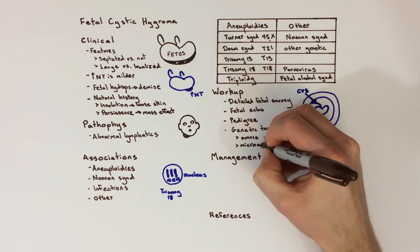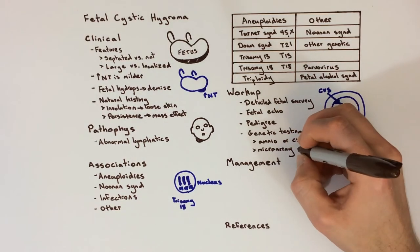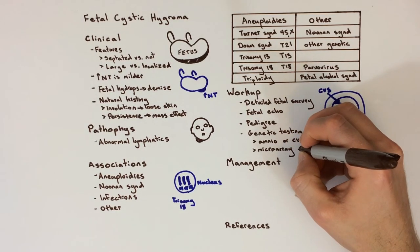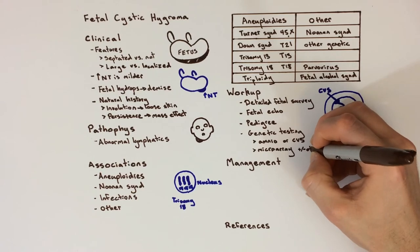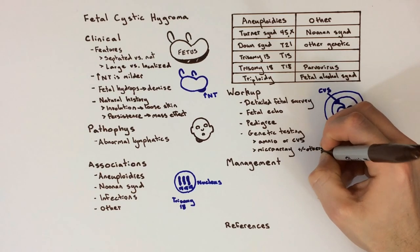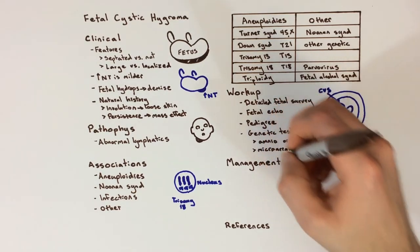A non-invasive test to look for chromosome problems also exists, called cell-free fetal DNA testing. This is where small bits of DNA from the placenta that end up in mother's blood are tested for extra or missing chromosomes.